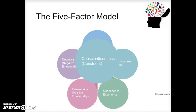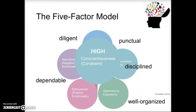Our next trait is conscientiousness. Someone who is high on conscientiousness is disciplined and organized, punctual, diligent, and dependable — the type of person that likes to follow rules. Interestingly, this trait has been shown to increase as students go through their college career. They've tested college students when they first started and when they finished, and found that students became more conscientious over the course of a four-year degree, though people were just nudged in the high direction rather than completely changing.